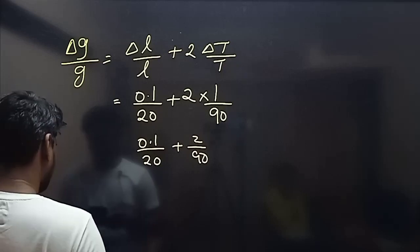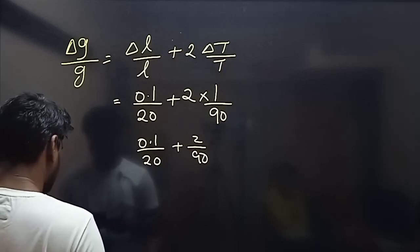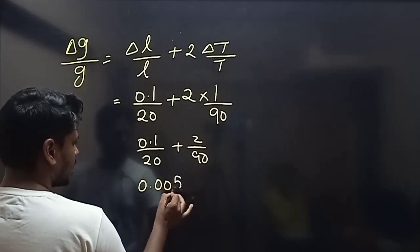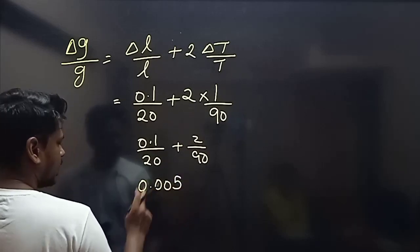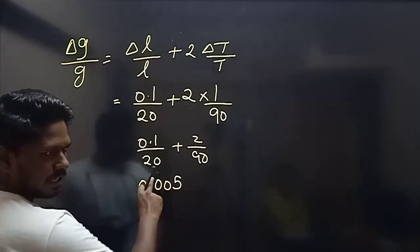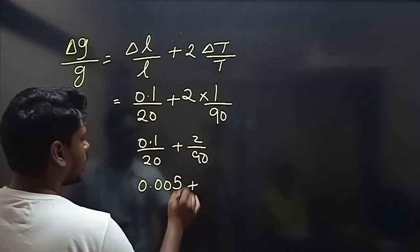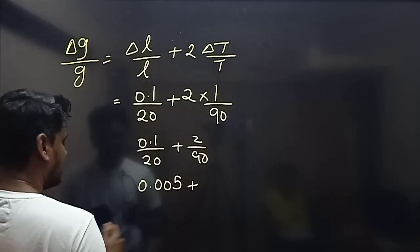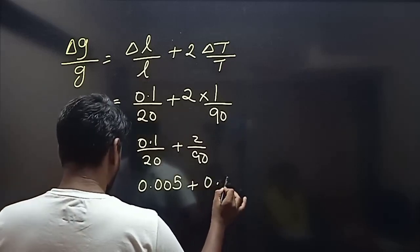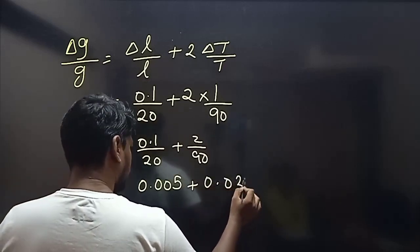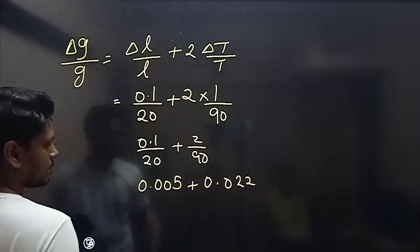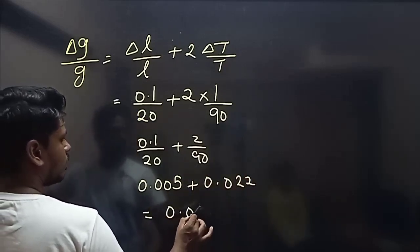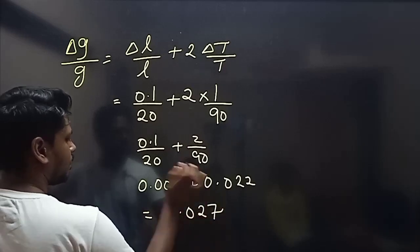Plus 2 divided by 90, that's 1 by 45. This gives approximately 0.027.